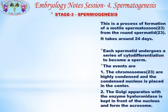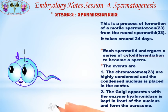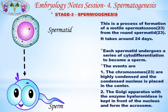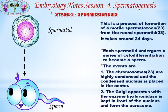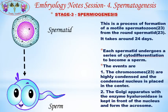Stage 3 is spermiogenesis — the process of formation of a motile spermatozoon from the round spermatid, taking around 24 days. Under this stage, each spermatid undergoes a series of cytodifferentiation to become a sperm. The events include: first, the chromosomes are highly condensed and the condensed nucleus is placed in the center.